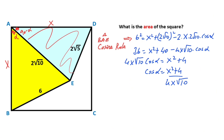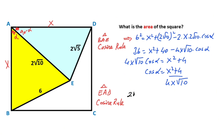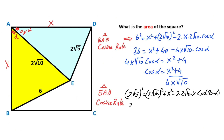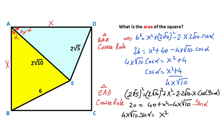Now, also for this triangle, if we apply the cosine rule: (2√5)² = (2√10)² + x² − 2·(2√10)·x·cos(90° − α). Therefore 20 = 40 + x² − 4x√10·sin α, since cos(90° − α) = sin α. So 4x√10·sin α = x² + 20, meaning sin α = (x² + 20) / (4x√10).